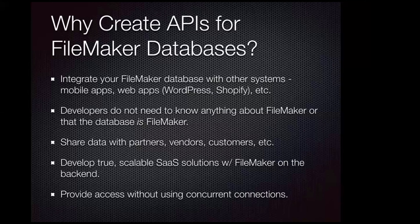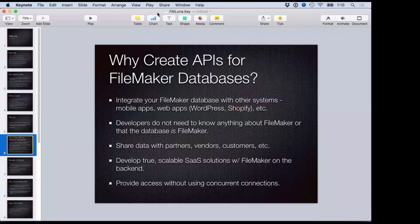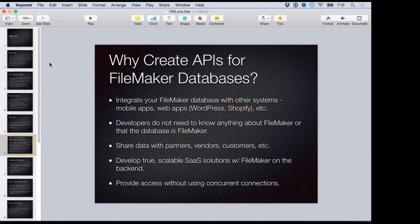One of the really neat benefits is that with an API in front of your database, you can provide access without using concurrent connections. So you can have a scalable web or mobile application going through the API to get to the database without consuming any concurrent connections. A question came in: can I build FileMaker Go apps without using a concurrent connection? Yes, you most certainly can. You can use the Insert from URL script step and send a request to your FM Luna API — get data, update records, delete, whatever — all without needing a concurrent connection.